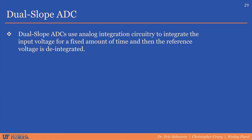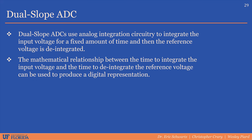Dual-slope ADCs use analog integration circuitry to integrate the input voltage for a fixed amount of time, then deintegrate the reference voltage. The mathematical relationship between the integration time of the input voltage and the deintegration time of the reference voltage is used to produce a digital representation. Pros are accuracy and cost effectiveness; cons are relatively low conversion rates.